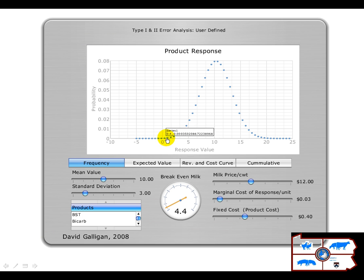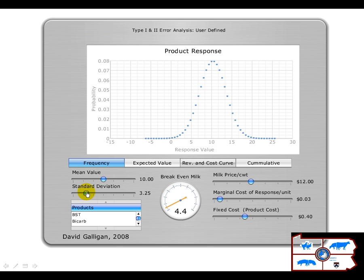Here we're looking at what the distribution of the response might be, where we've dialed in a mean response of 10 pounds with a standard deviation of 3. As we change these parameters, the shape of the curve changes. We also have what the break-even level of milk is. Based on the value of milk, if milk is more valuable, we need a lower break-even response. As milk price goes down, we need a higher level. If the cost of the product is higher, we need more of a milk response to pay for the product, and similarly for feed cost. So we have the basic inputs that go into looking at this economics.